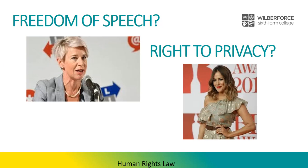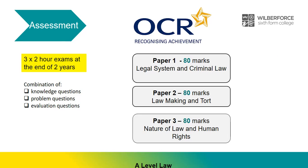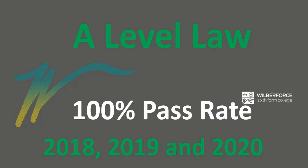Obviously these can give rise to lots of debate within the class because these are very topical issues. Here we have a breakdown of how the A-level law is assessed. As you can see, there are three papers assessed at the end of two years — three two-hour exams with a combination of knowledge questions, problem questions and evaluation questions. In A-level law we do have an excellent pass rate: 100% pass rate for the past three years.